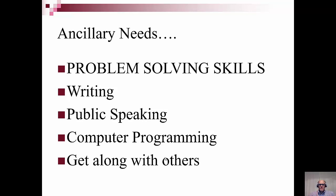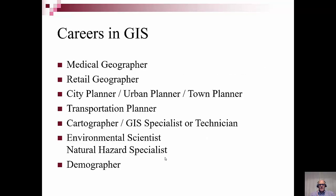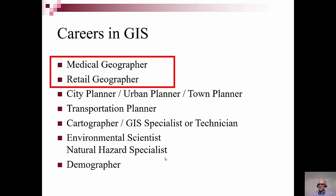When we talk about careers in GIS, there are tons of them — demographer, environmental hazard specialist, environmental scientist, cartographer, GIS specialist, transport planner. But two of the fastest growing fields are medical geographer and retail geographer: Where are we going to build the next McDonald's or Home Depot? What are the patterns of COVID rates? Medical geography and retail geography have really hopped to the forefront of GIS in terms of visibility in the news, media, and pay.